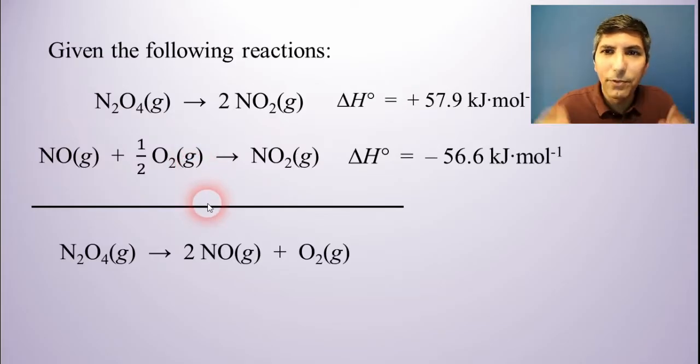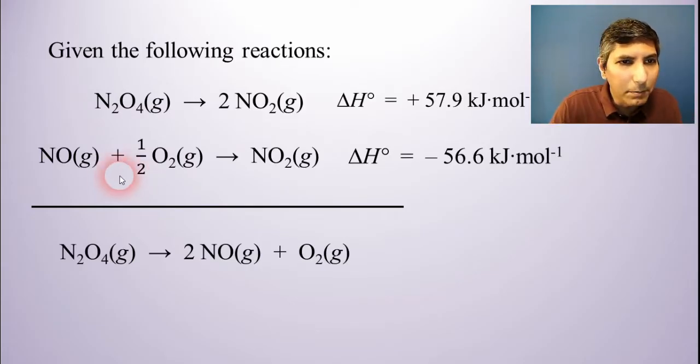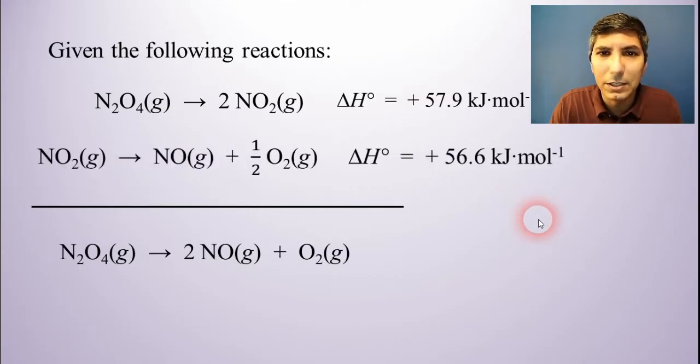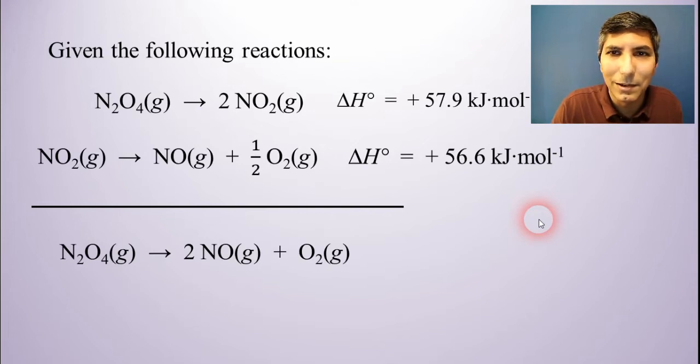On the other hand, though, take a look at NO. NO is on the right side of the arrow, whereas NO up in this other equation, number two, it is on the wrong side. It's on the left side. So I'm going to need to flip equation number two. Now remember what happens when I flip an equation. What happens to the delta H? Well, back in an earlier part of this unit, we said that that changes the sign. So when I flip this equation around, delta H becomes a positive 56.6, just like so.